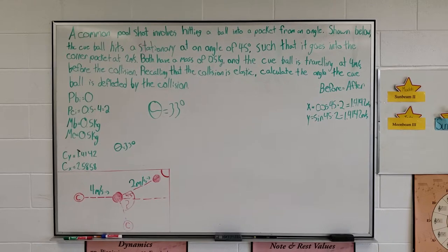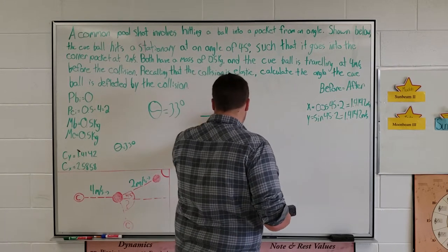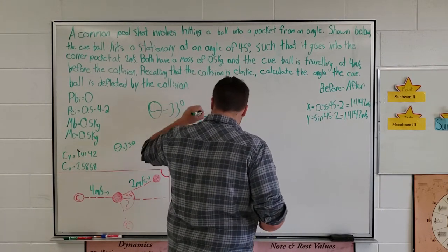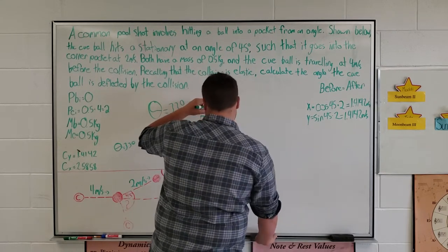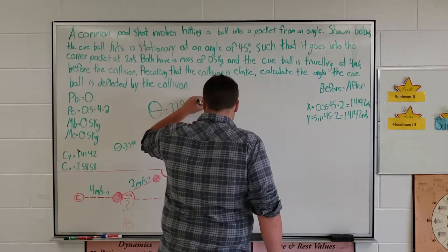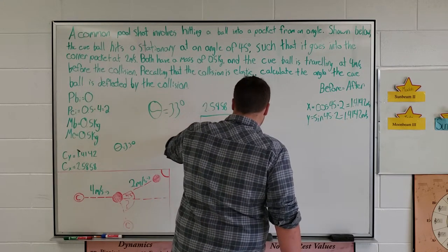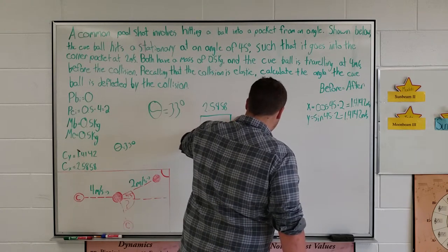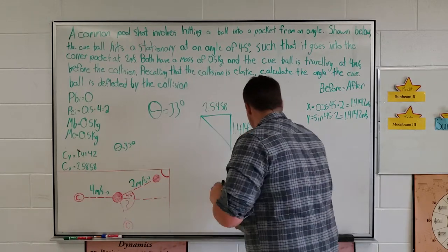Now, finally, we use the Pythagorean theorem with our two values, which is a squared plus b squared equals c squared, to find our last side. Again, we need this triangle. We'll have our 2.5858 on top and 1.4142 on the side. We'll square both of these numbers.